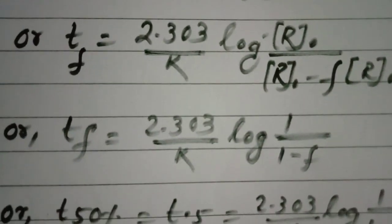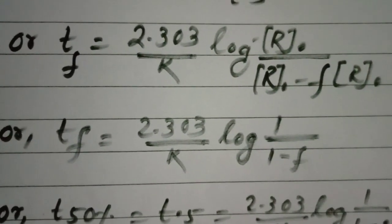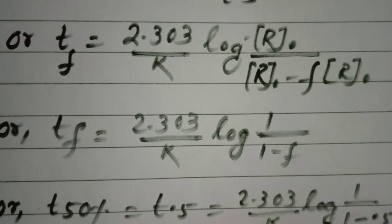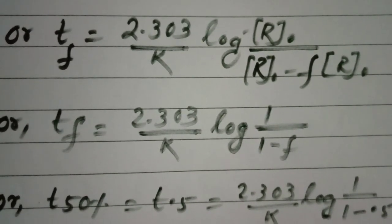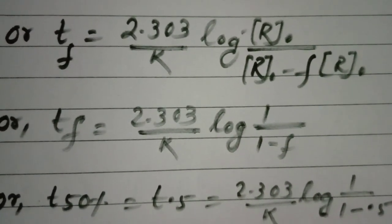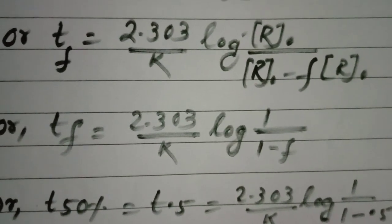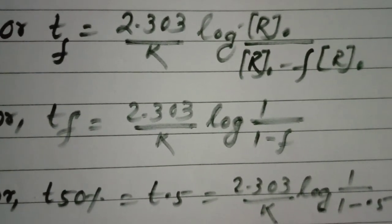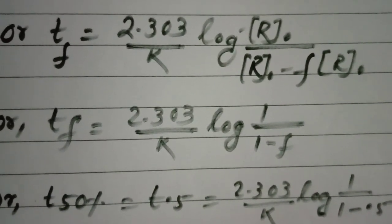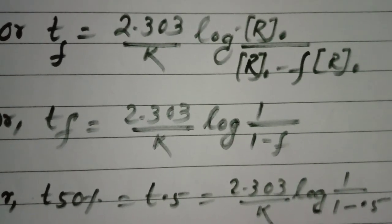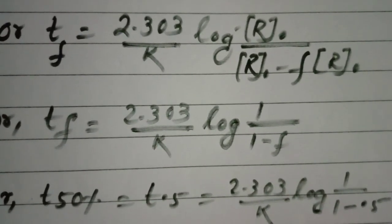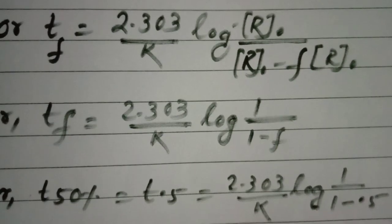Then at tf, the equation is reduced to 2.303 by k log 1 by 1 minus f. Here you take common r0 in the equation. You will be getting r0 by r0 minus f r0 as 1 by 1 minus f.